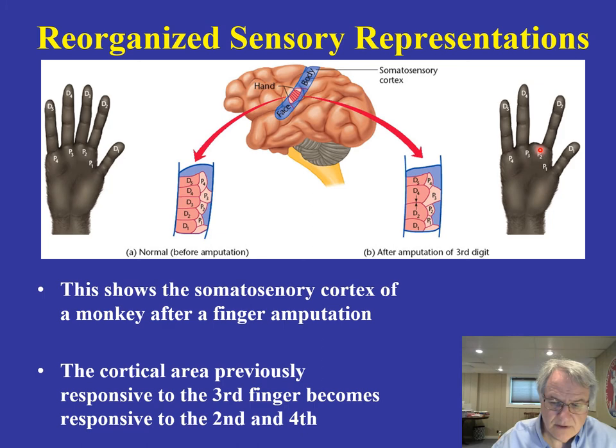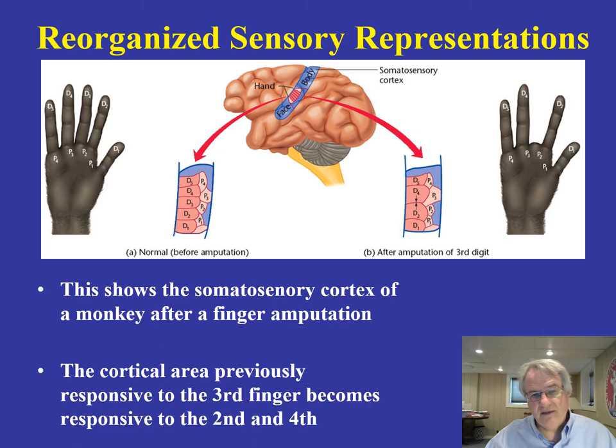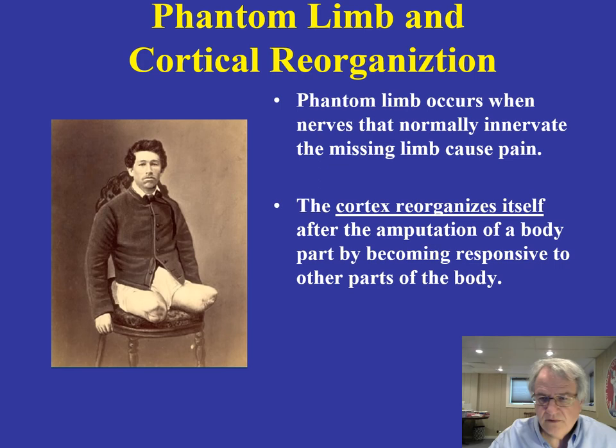The cortical area that was previously responsive to that third finger now becomes responsive to the second and the fourth finger. You get this reorganization taking place after amputation, demonstrating that the brain possesses the capability of reorganizing. This also leads to another interesting phenomenon called phantom limb, in which you're also seeing cortical reorganization.